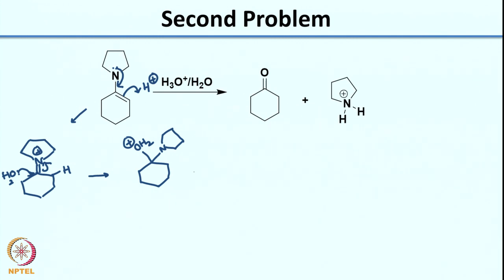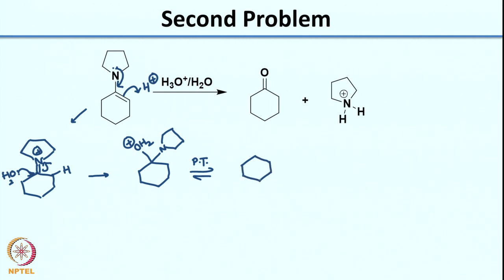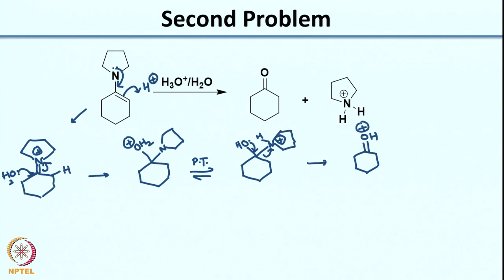Once you generate this intermediate, as I showed in the previous aldol mechanism, you can do a proton transfer. Always remember to put the charges properly. Once you do the proton transfer, these lone pairs of electrons can come in, and what you end up generating is the next intermediate.